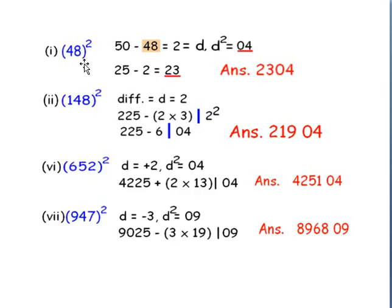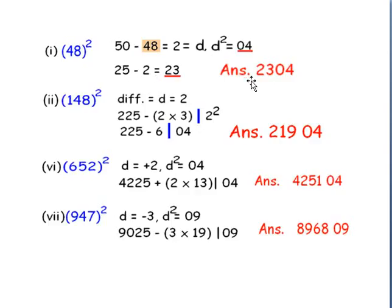Let us first know how to find the square of 48. 48 is nearest to 50 and 50 minus 48 is 2. This difference we will write by the symbol D. So D square is 04. We will write 04, and subtract the difference from 25: 25 minus 2 is 23. So my answer is 2304. 48 square is 2304.